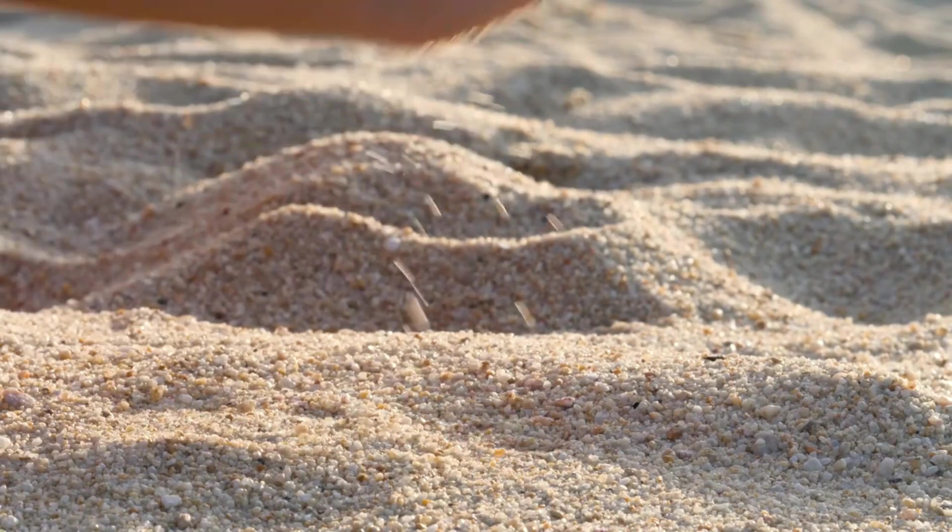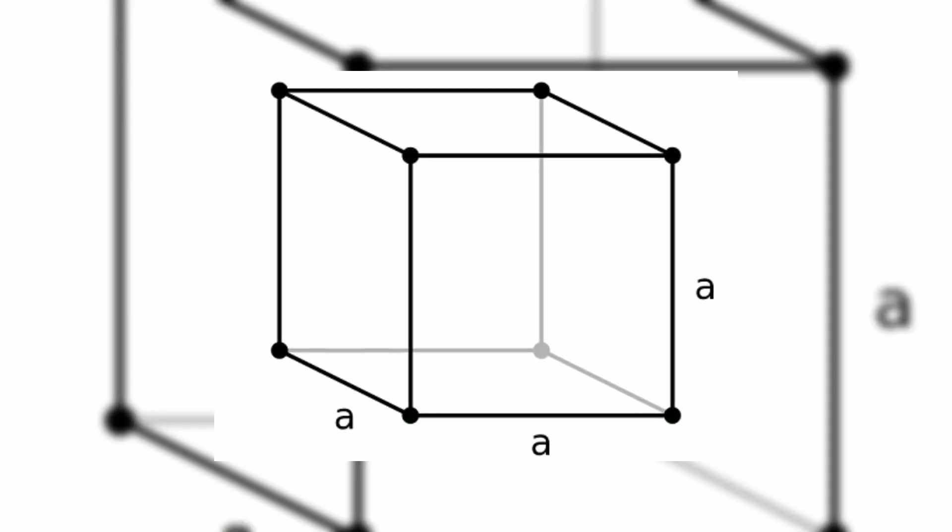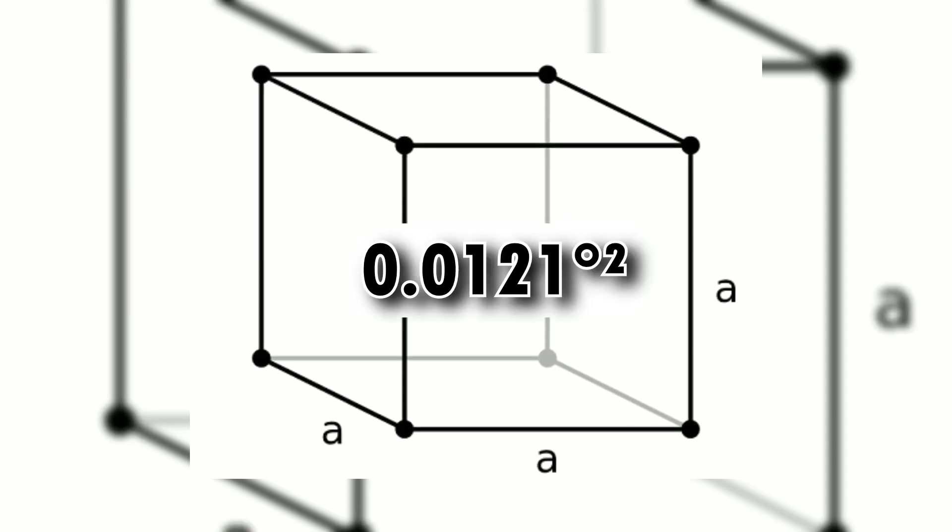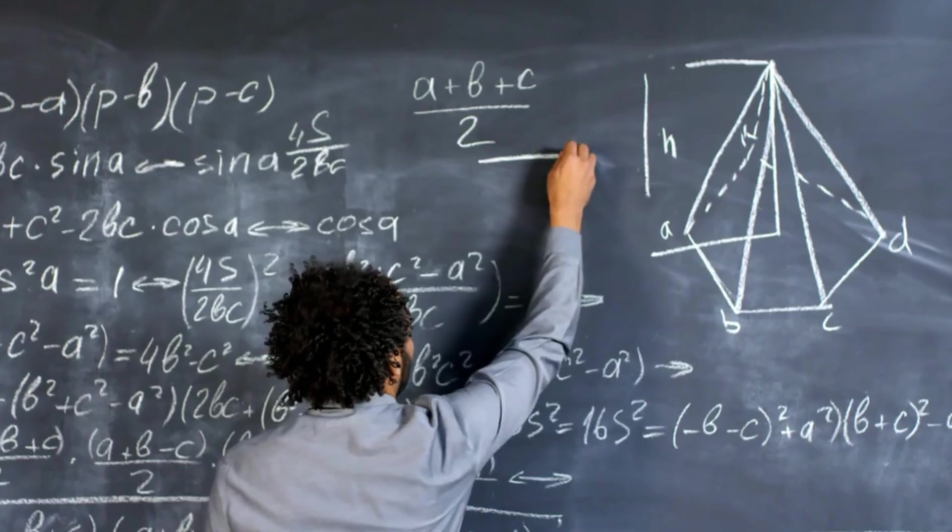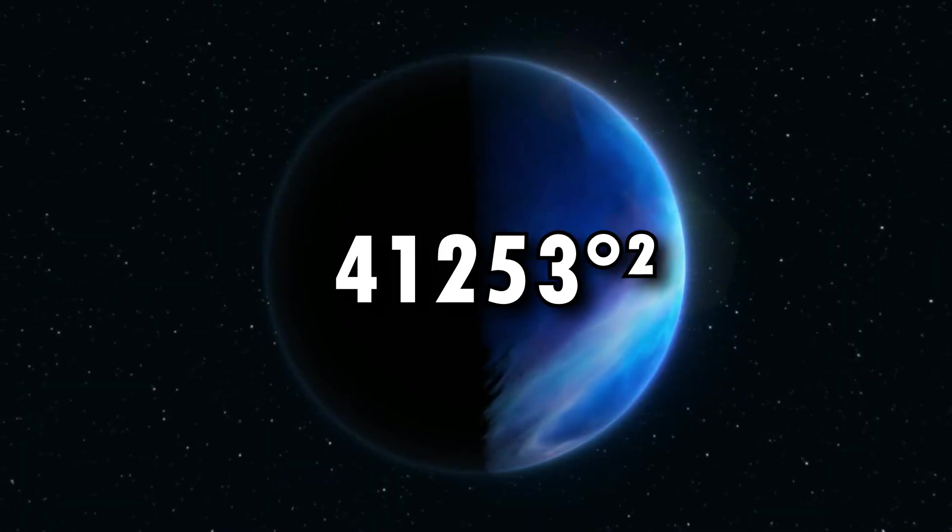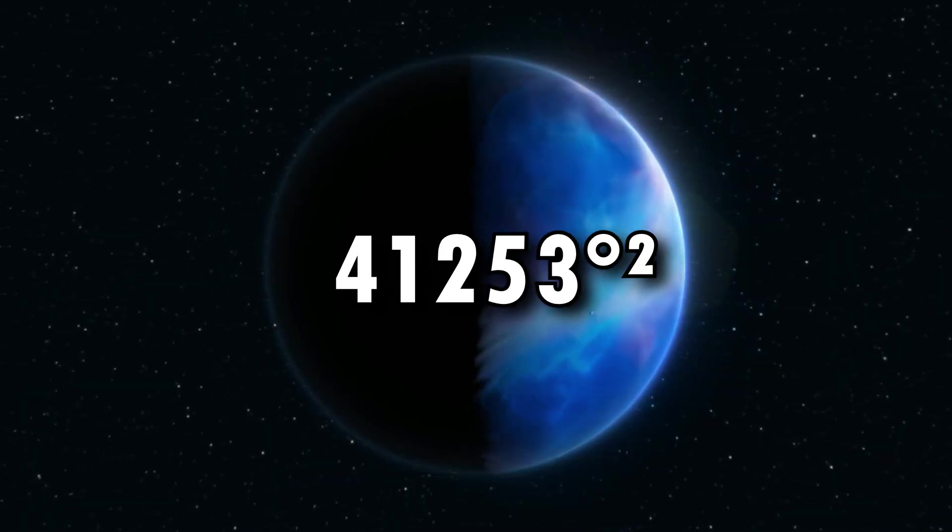We assume that our grain is a cubic crystal, so the area of the obscuring wall is 0.01 of a square degree. On the sphere, we have 41,253 square degrees.